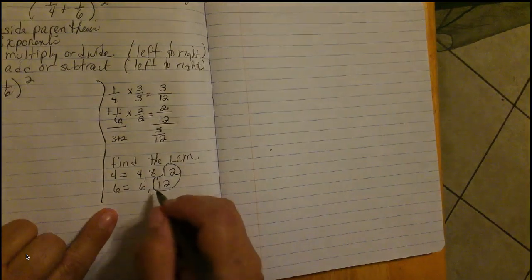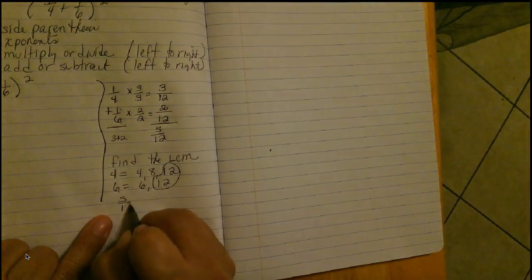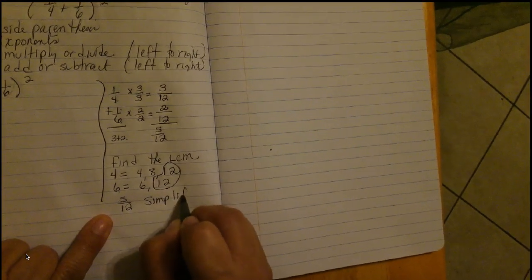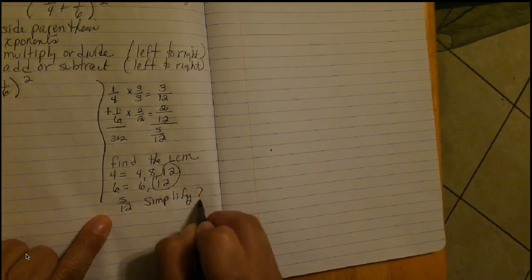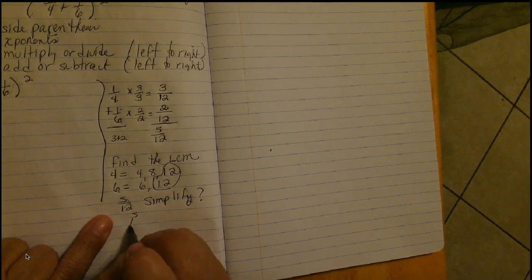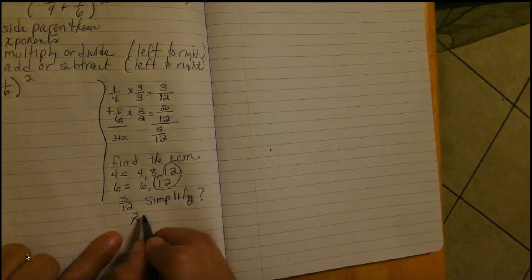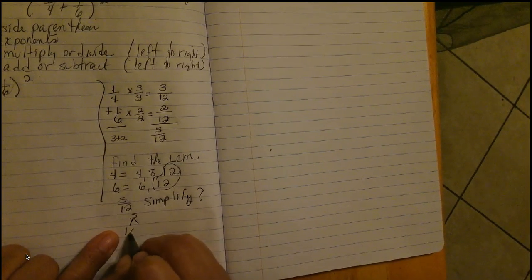Okay. So, looking at the five-twelfths, I ask myself, does this simplify? I notice that five is a prime number. So, when I try to make a list of factors here, five does not factor. It is prime.